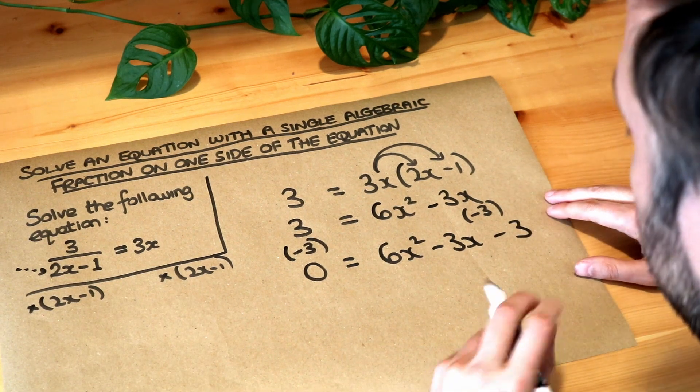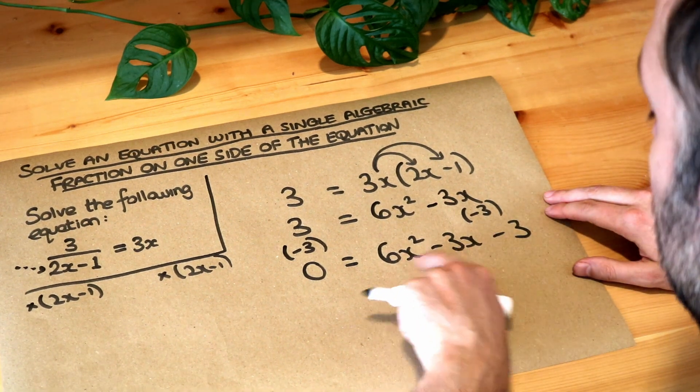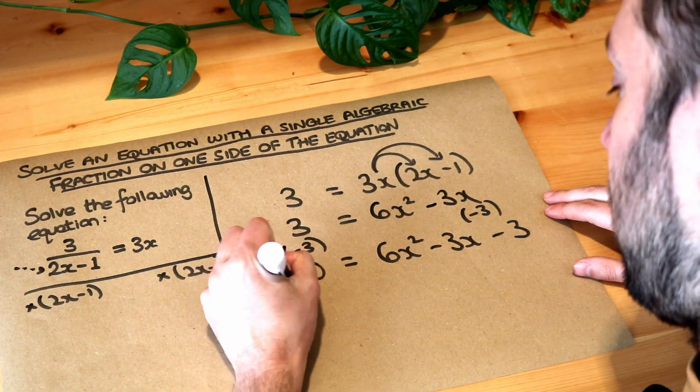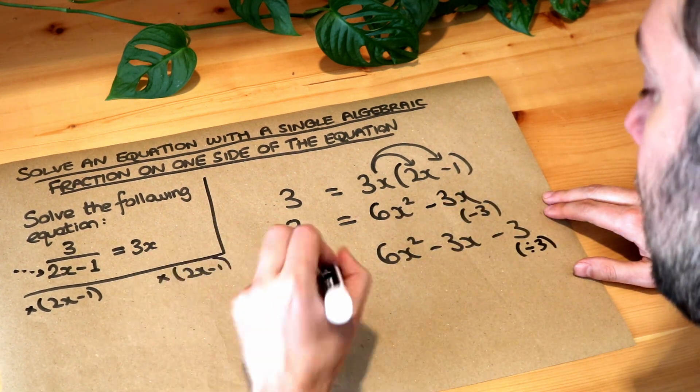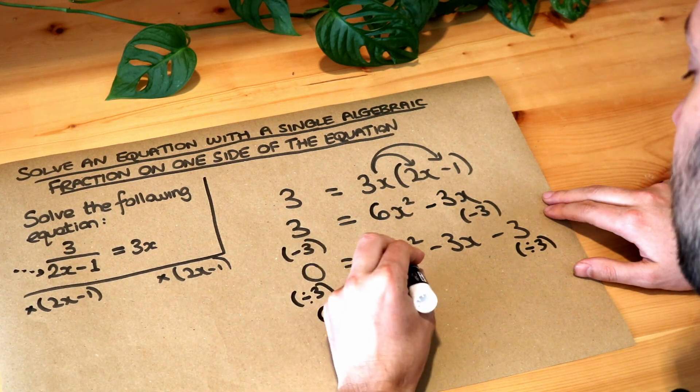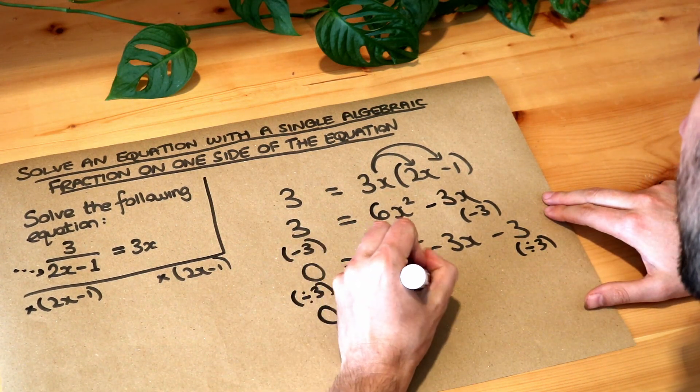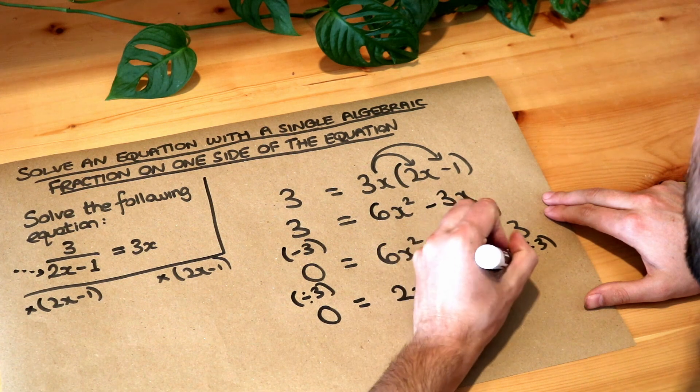Now you might notice that all three of these terms are divisible by 3, so we could just divide both sides by 3 to make our lives a bit easier. 0 divided by 3 is still just 0. Divide these by 3, we get 2x squared minus x minus 1.